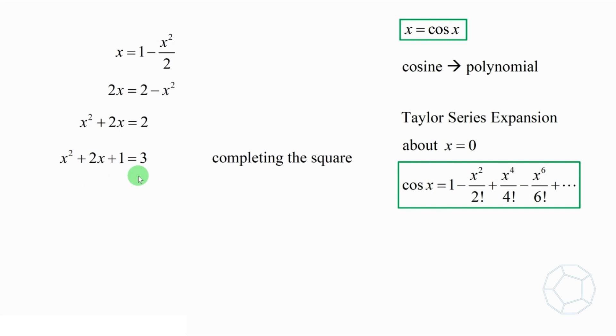Now, the left-hand side is bracket x plus 1 whole square. Taking the square roots, we have x is equal to the square root of 3 minus 1, or the negative square root of 3 minus 1. The negative value should be rejected because from the graph, x must be positive.